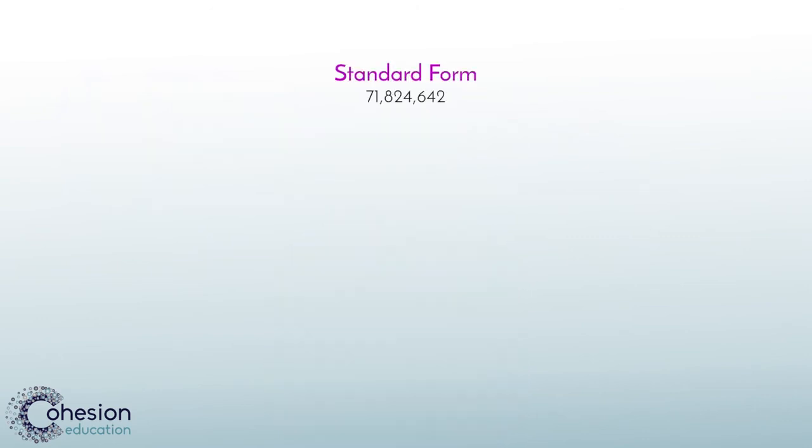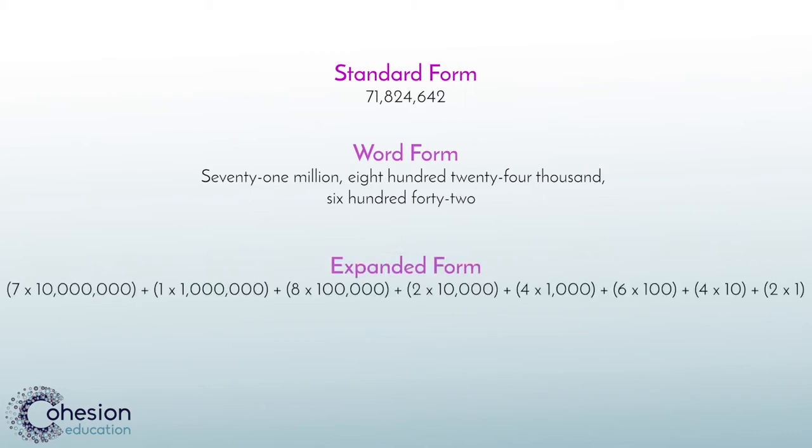First, let's look at standard form. This is the standard way you will see any number represented. The standard form of the number 71,824,642 is written like this. Next is word form. This way of representing a number is basically writing the number from standard form using words. Lastly, expanded form takes the number and breaks it down by adding up each place value to represent the whole number.